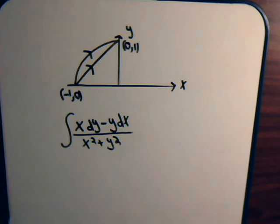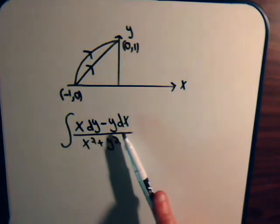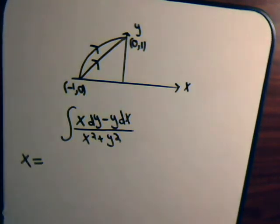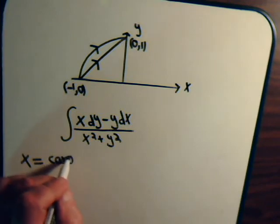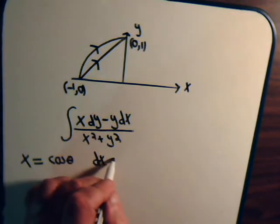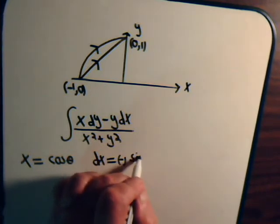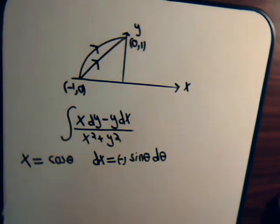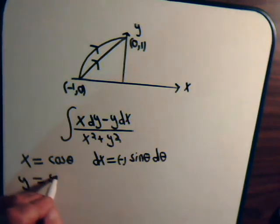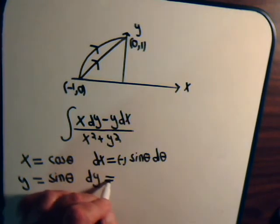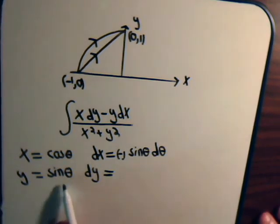We have x dy and y dx in the integrand. Using polar coordinates, x equals cosine of theta and dx equals minus sine of theta d theta. Also y equals the radius one times sine of theta, and dy equals cosine of theta d theta.